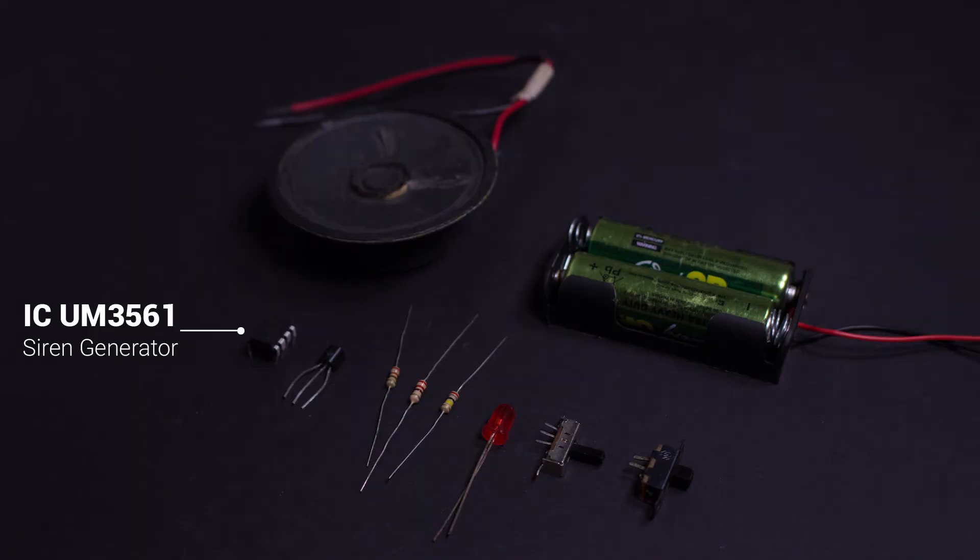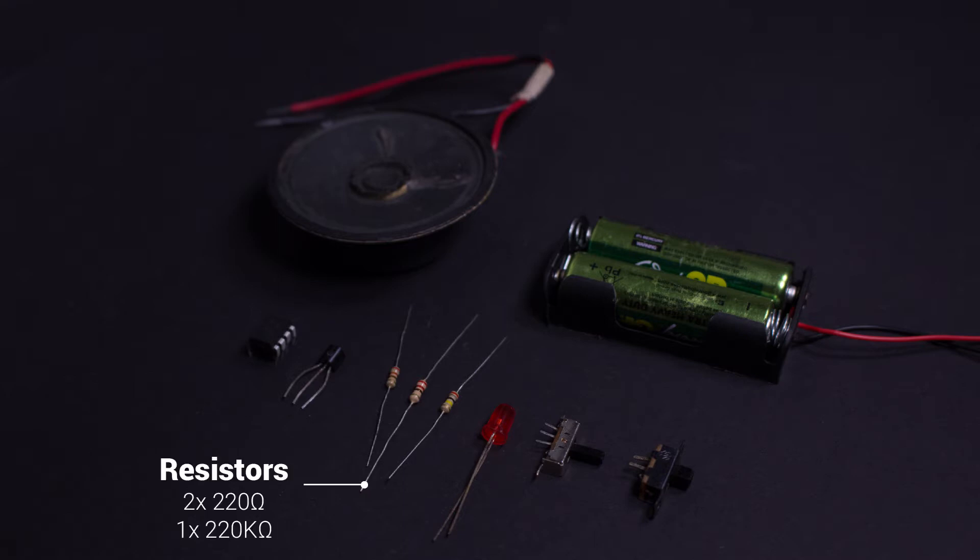A UM 3561 siren generator IC, a BC547 NPN transistor, two 220 ohm resistors and one 220 kilo ohm resistor, one 5mm LED, one SP3T slide switch, one SPDT slide switch, two double A batteries and a battery holder, one 3 ohm speaker.